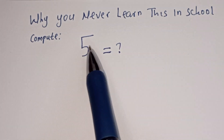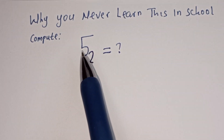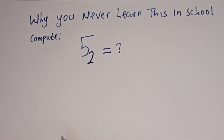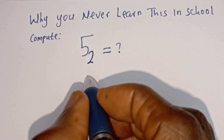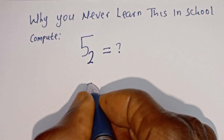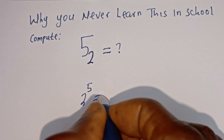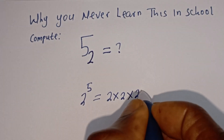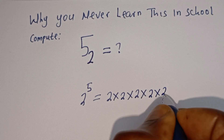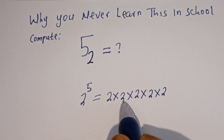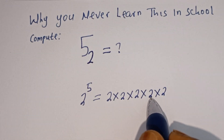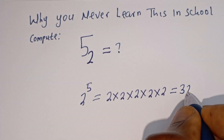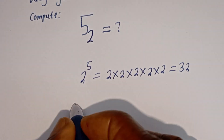Hello, how to quickly solve this nice math problem, and I'm going to tell you the simple reason why you never learn this in school. Take it for instance, if you have two to the power of five, this is equal to two multiplied by two multiplied by two multiplied by two multiplied by two, and this is 2×2=4, ×2=8, ×2=16, ×2=32. This is equal to 32.